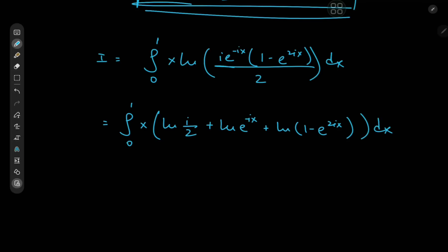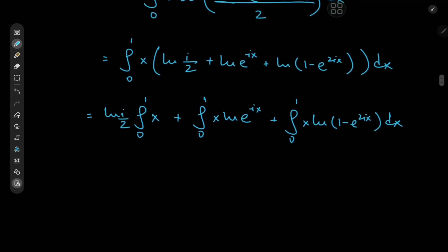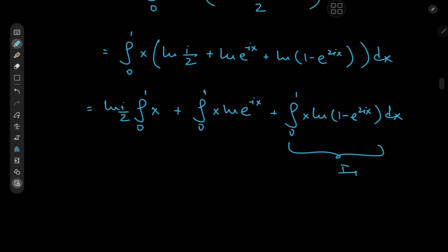Multiplying through by x and using the linearity of the integration operator, we have several integrals: the integral from 0 to 1 of x·log(i/2) dx — where log(i/2) is a constant — plus the integral from 0 to 1 of x·log(e^(−ix)) dx, where log and exponential cancel, plus the integral from 0 to 1 of x·log(1 − e^(2ix)) dx, which is the really interesting one, which we'll call I₁.